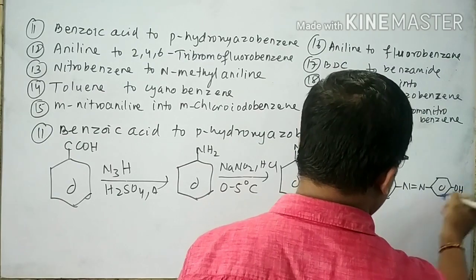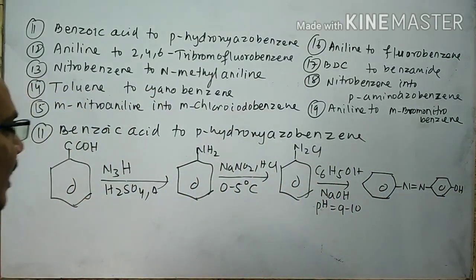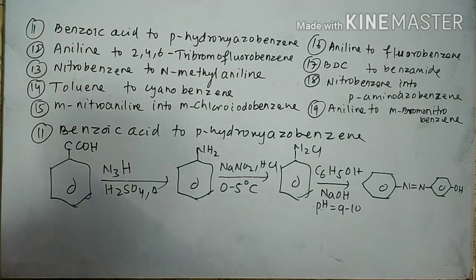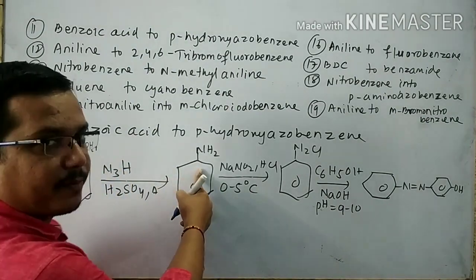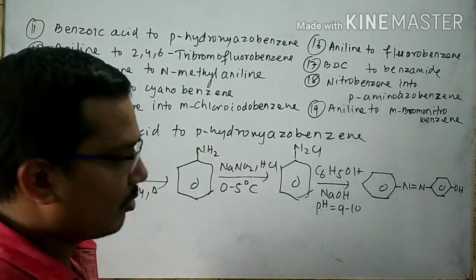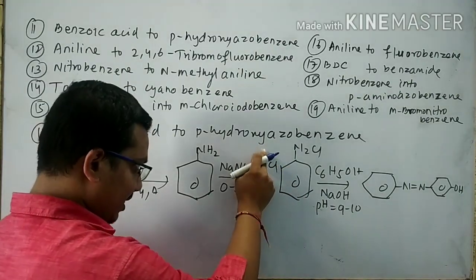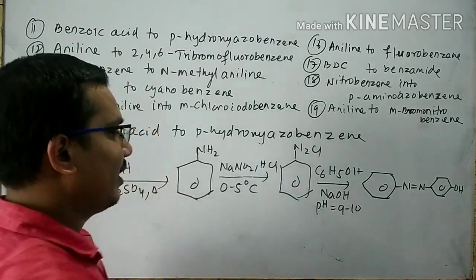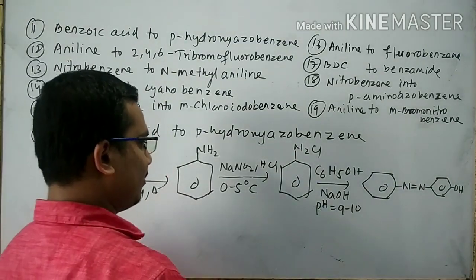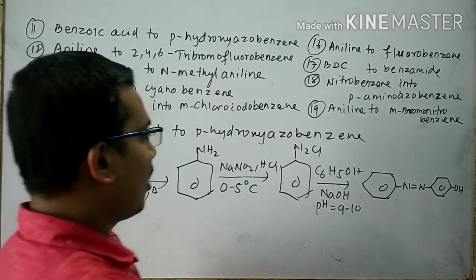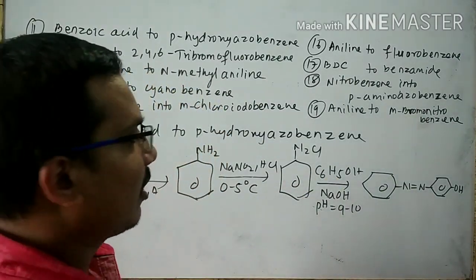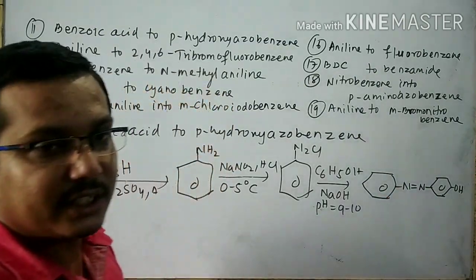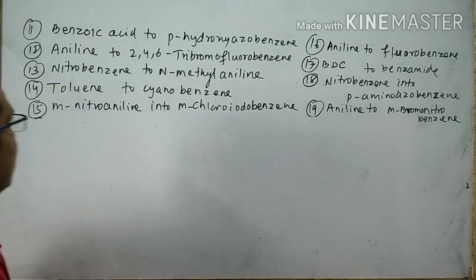To repeat: benzoic acid undergoes reaction with hydrazoic acid to form aniline. Aniline reacts with NaNO2 in HCl at 0 to 5 degrees centigrade to form BDC. BDC reacts with phenol at basic medium (pH 9 to 10) to give para-hydroxy azobenzene.